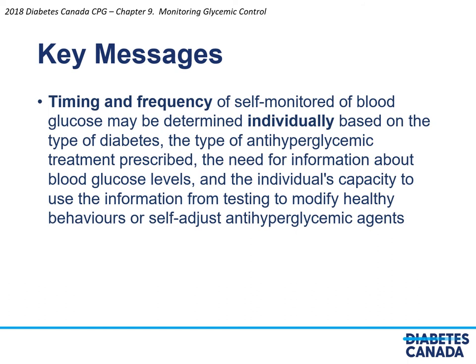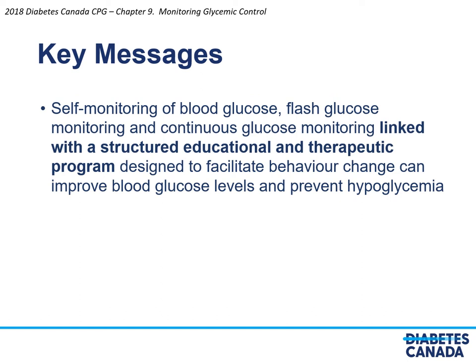Timing and frequency of self-monitored blood glucose may be determined individually based on the type of diabetes, the type of anti-hyperglycemic treatment prescribed, the need for information about blood glucose levels, and the individual's capacity to use the information from testing to modify healthy behaviours or self-adjust anti-hyperglycemic agents. Self-monitoring of blood glucose, flash glucose monitoring, and continuous glucose monitoring linked with structured educational and therapeutic programs designed to facilitate behaviour change can improve blood glucose levels and prevent hypoglycemia.